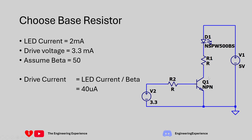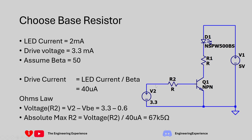Next, calculate the current required to be driven from the input - the drive current equals the base current. The drive current needed is the LED current divided by beta: 2 milliamps divided by 50 gives 40 microamps. So we want to provide at least 40 microamps from the input. Using Ohm's law, we calculate the voltage drop on R2 - knowing the voltage on each side and the current allows us to find the maximum resistance value.